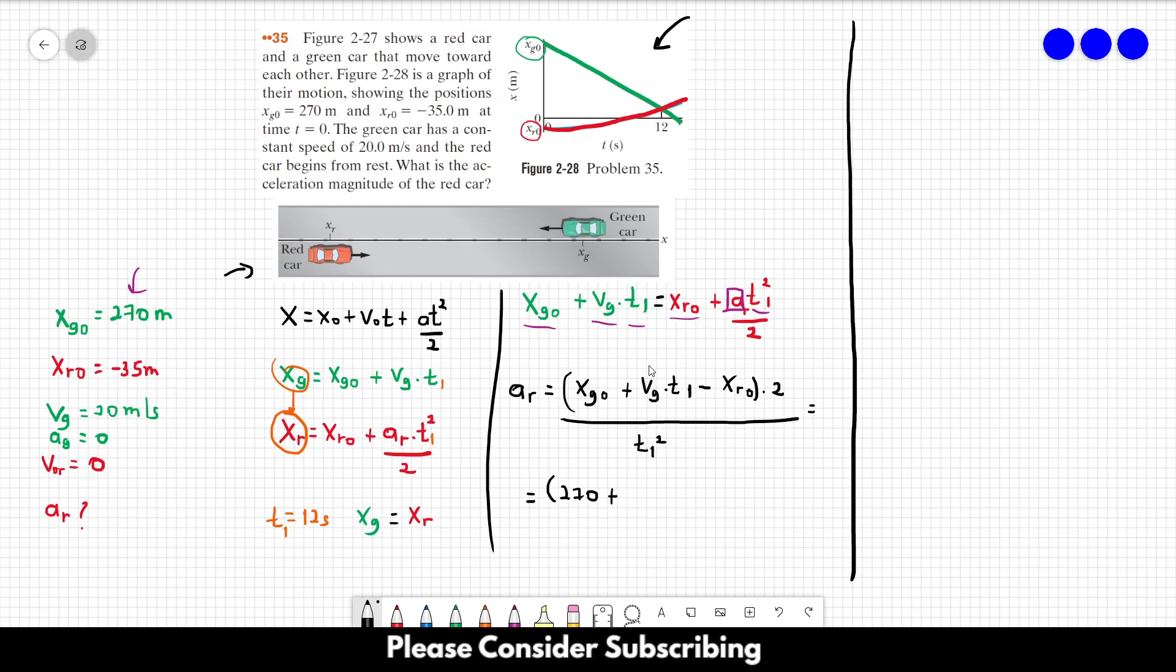However, just pay attention at this point because the speed of the green card is 20. However, its initial position is 270 and then they cross at a smaller number position. So you can see that its velocity is minus 20. Its speed is 20, its velocity is minus 20 meters per second. So VG in this equation is minus 20 times 12.